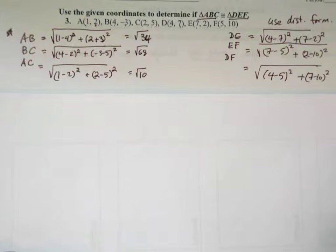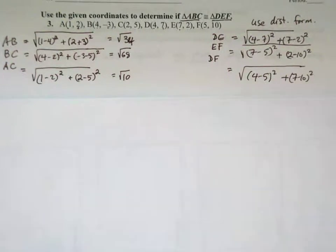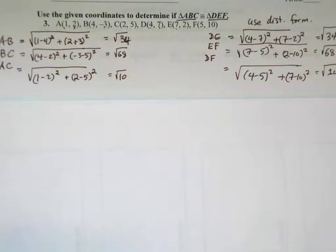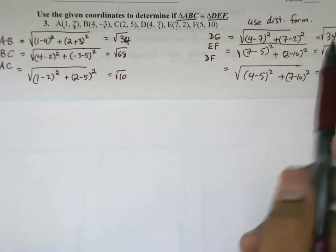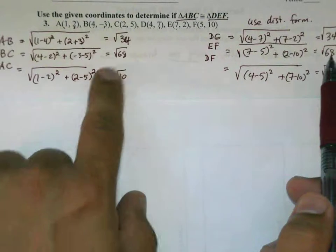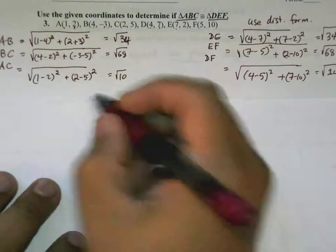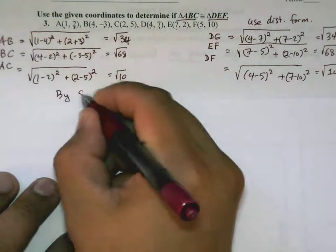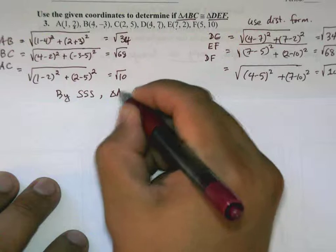You can see here that the side lengths for triangle DEF match up perfectly with the ones for ABC: square root of 34, square root of 68, and square root of 10.